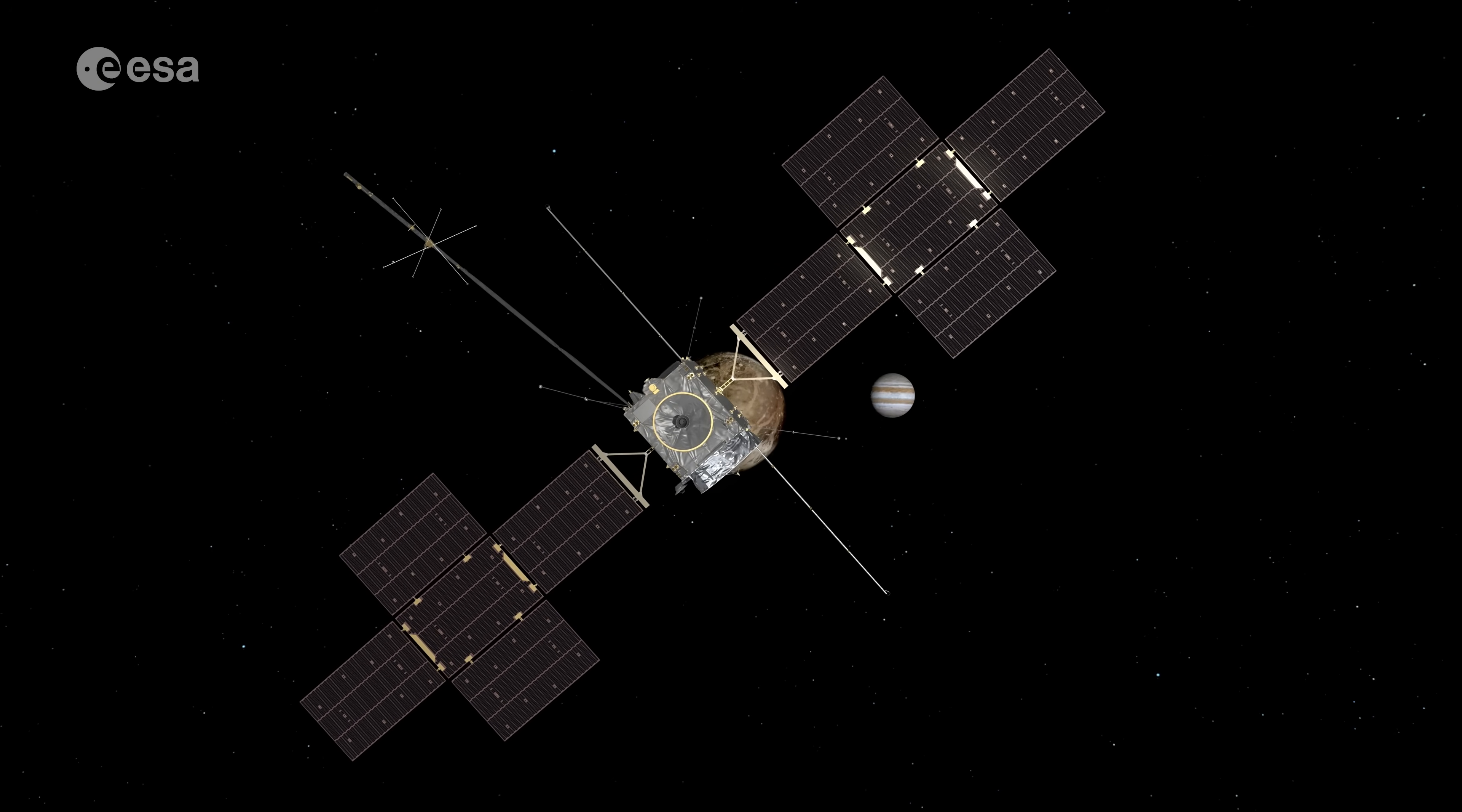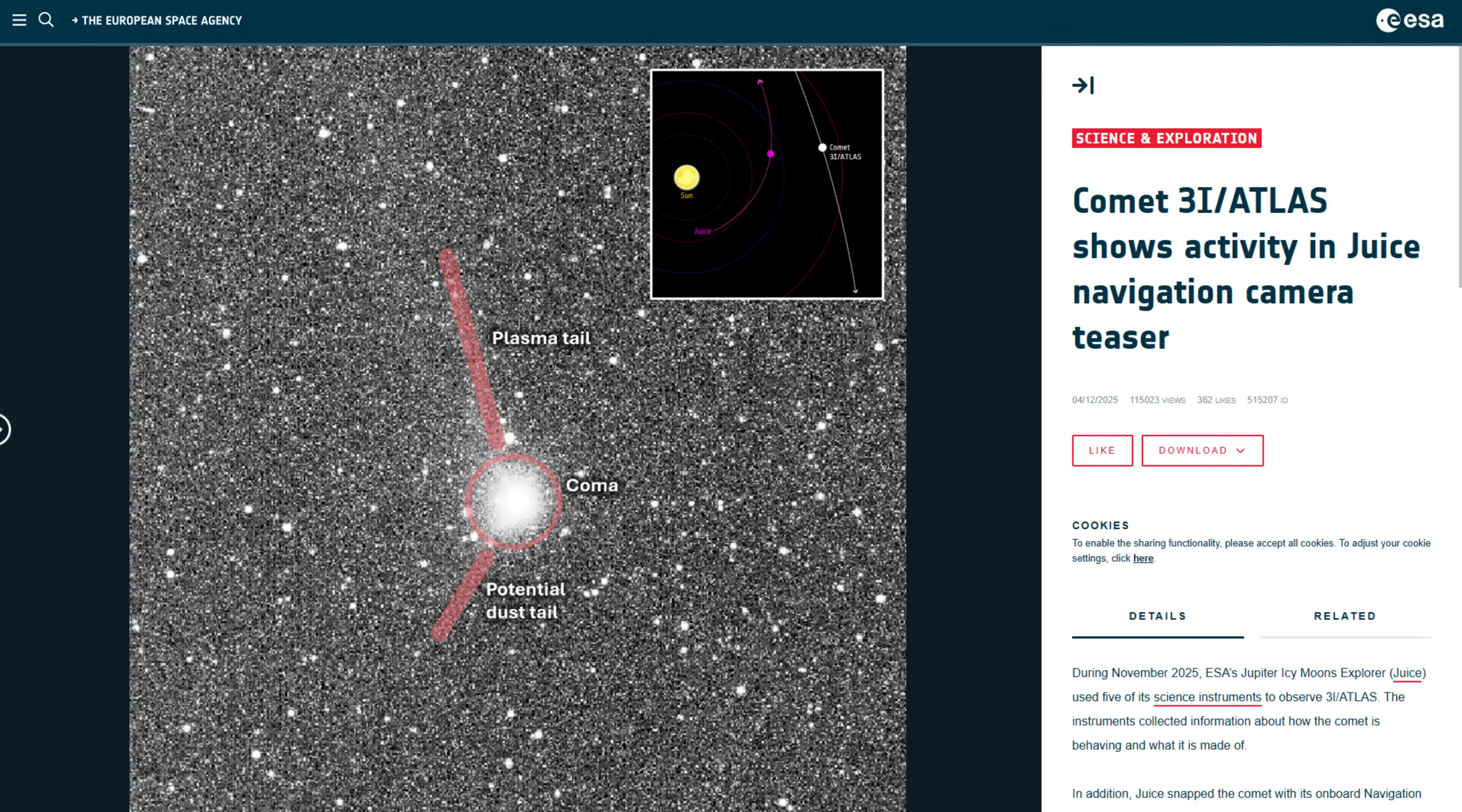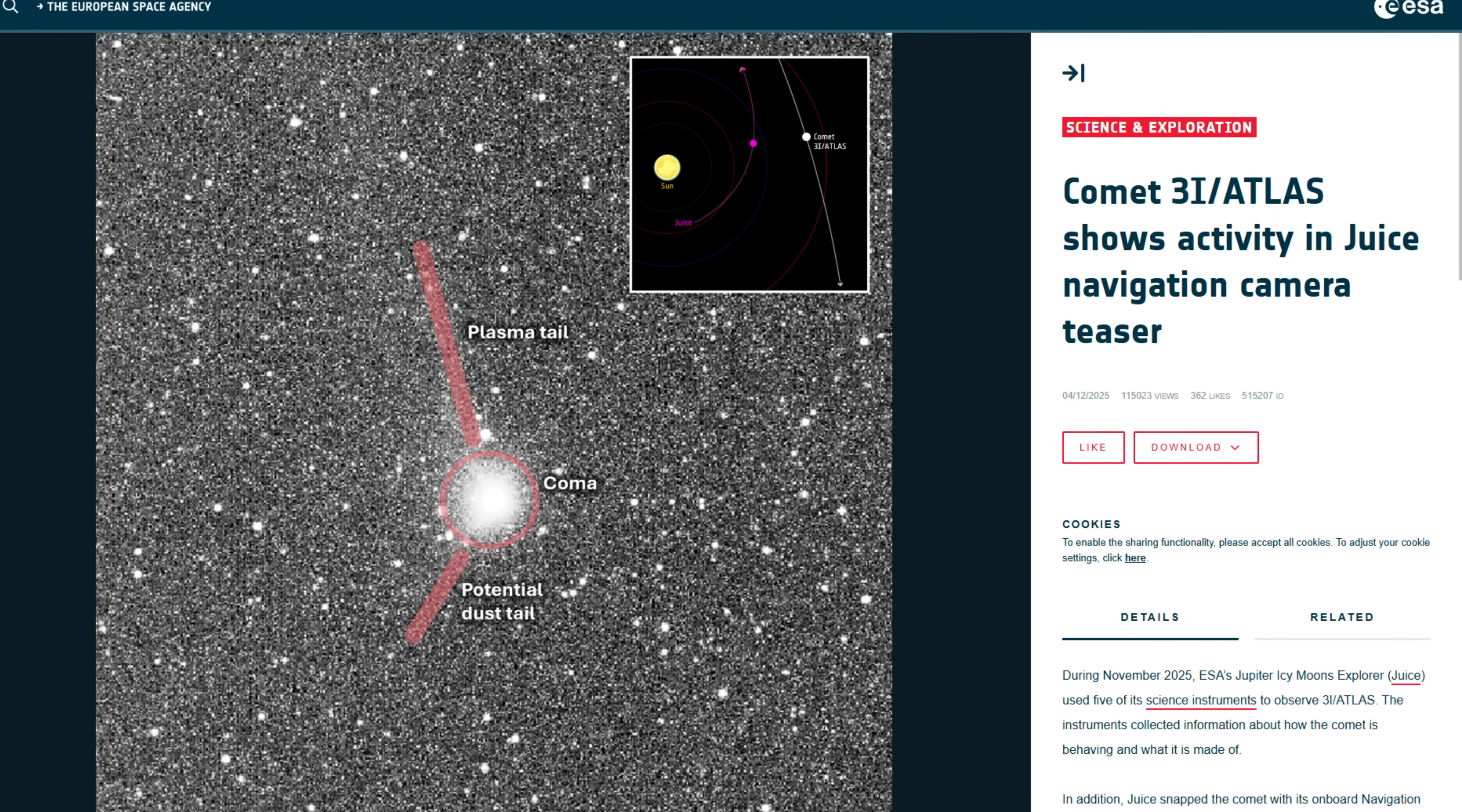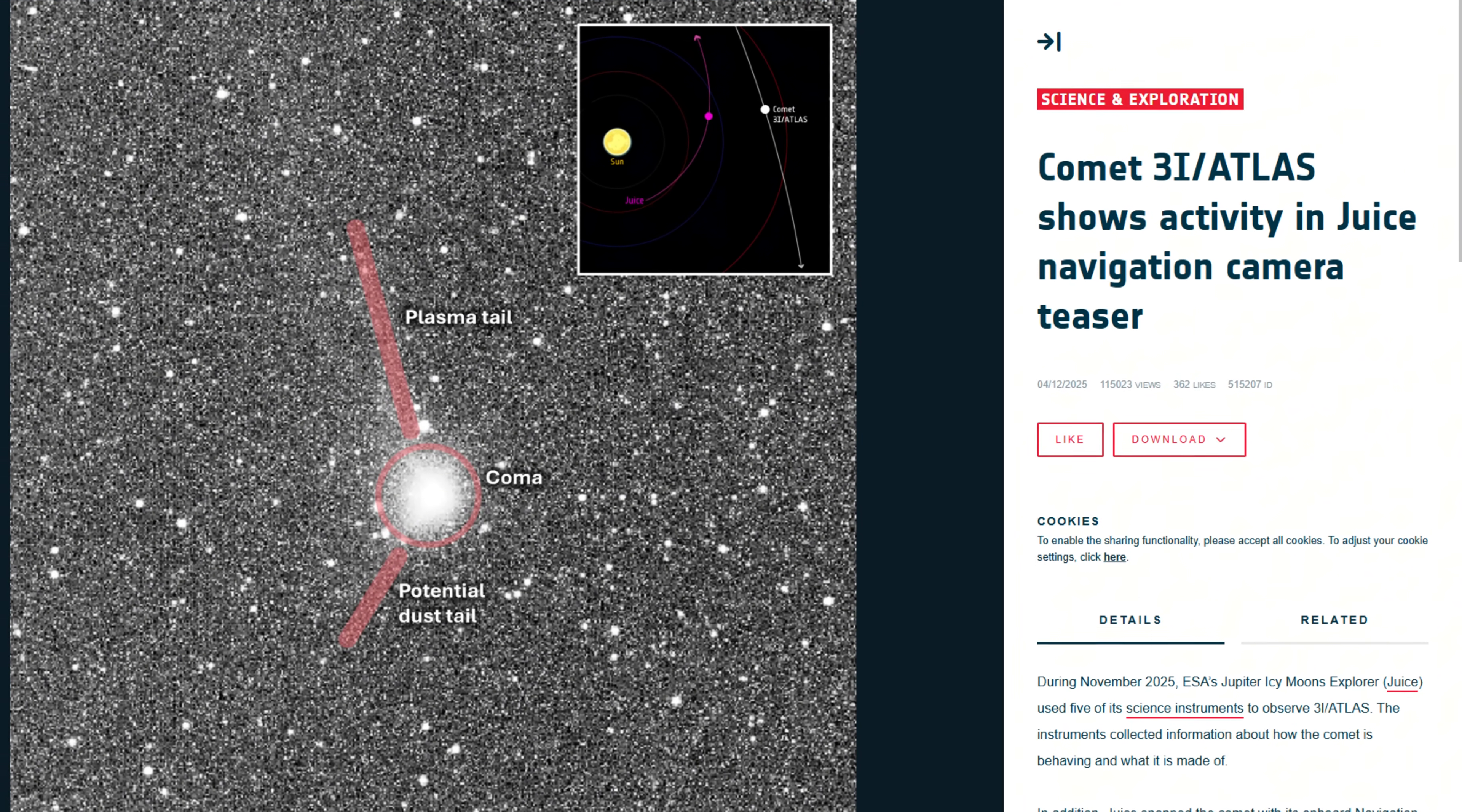While that debate intensified, ESA's JUICE spacecraft offered an unexpected early glimpse from a vantage point Earth cannot match. On November 2, two days before its closest approach to the comet at 66 million kilometers, JUICE captured a partial navigation image that revealed a sharply defined glowing halo and a split-tail configuration.